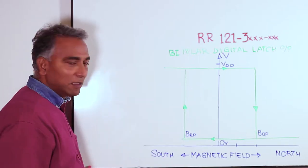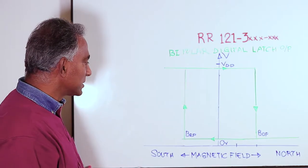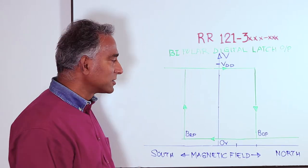The green lines here is the output from the sensor itself as a function of increasing magnetic field strength.